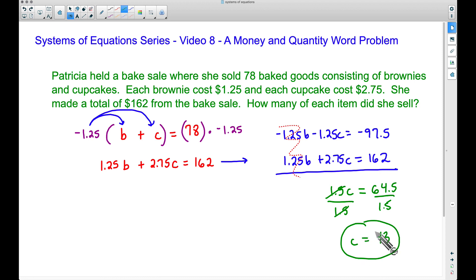Now we need to figure out how many brownies she sold. Well, we know she had 78 goods in all, so let's just take the 78. This is what b is equal to.